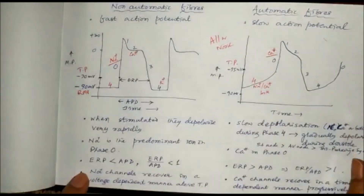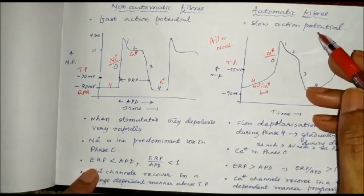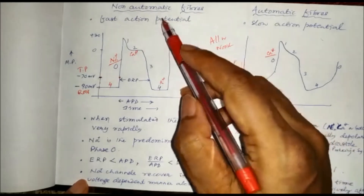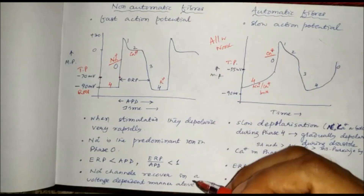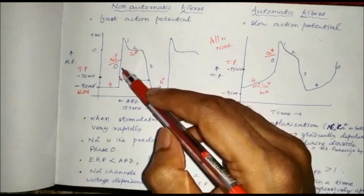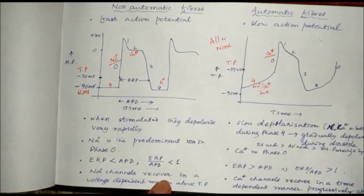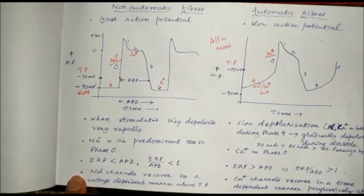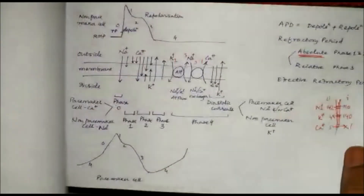In non-automatic fibers, the effective refractory period is less than the action potential duration (ERP/APD ratio < 1), whereas in automatic fibers, the ERP is greater than the APD (ERP/APD ratio > 1). This occurs because sodium channels in non-automatic fibers recover in a voltage-dependent manner above the threshold potential, while calcium channels in automatic fibers recover in a time-dependent manner progressively after repolarization. This concludes the electrophysiology of myocardial fibers.